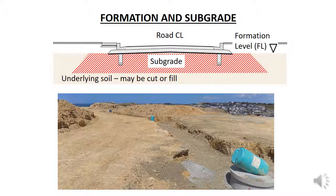Some soils are naturally strong and can support the road. However other soils may not be very strong and need to be strengthened. We will look at subgrade strengthening methods such as geogrids and lime stabilisation in later videos. Sometimes the soils are just too weak or otherwise unsuitable to be a subgrade, so these soils need to be removed and replaced with stronger materials. This is a very costly solution and is usually the last resort.